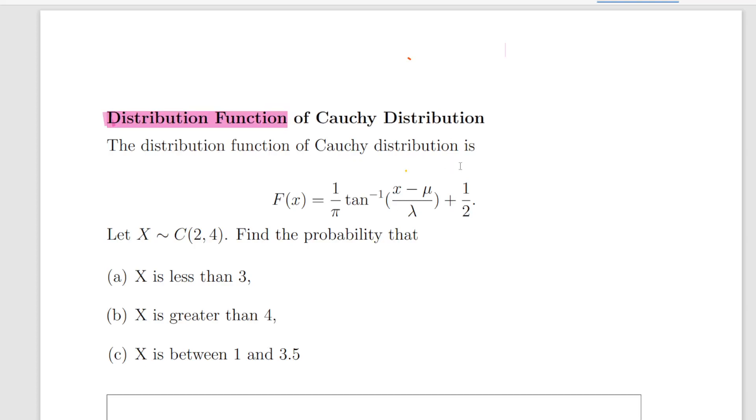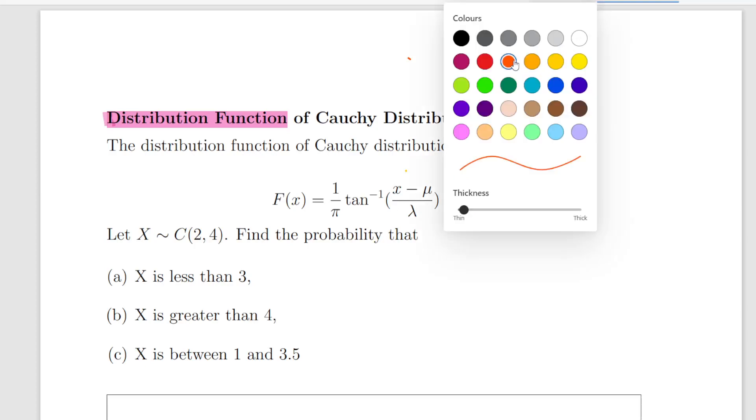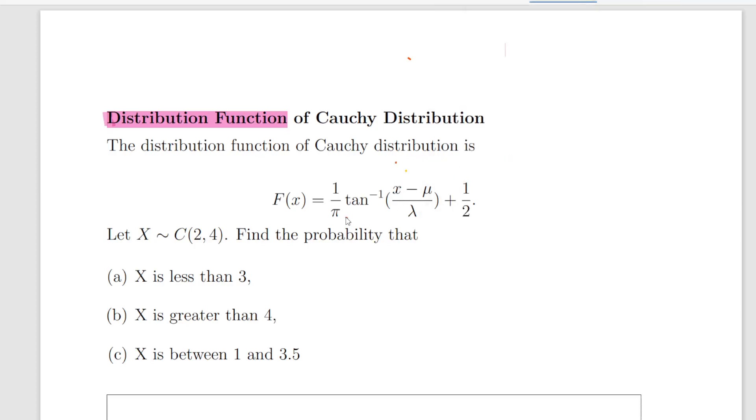So the distribution function of the Cauchy distribution is capital F of X equals 1 over pi times tan to the minus 1, so this is the key part here, of X minus mu divided by lambda plus 1 half. Let X equal a Cauchy random variable with parameters 2 and 4, and find the probability that X is less than 3, X is greater than 4, and then X is between 1 and 3.